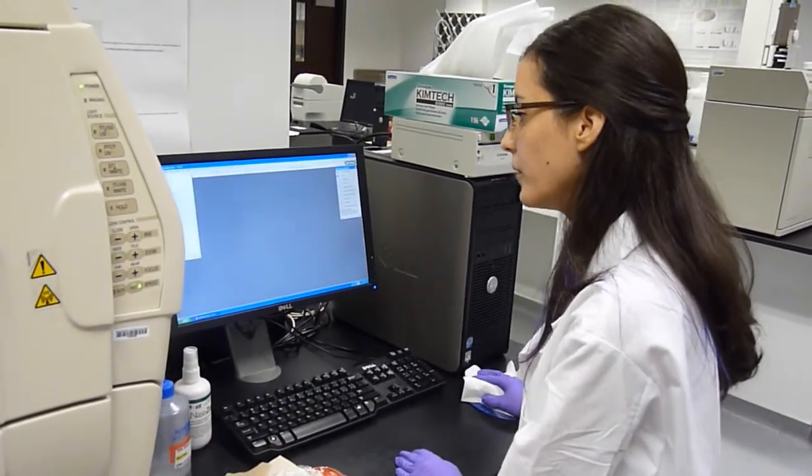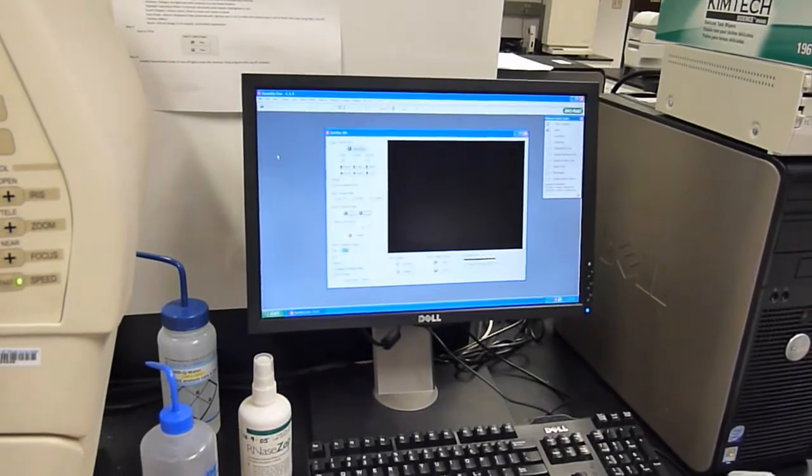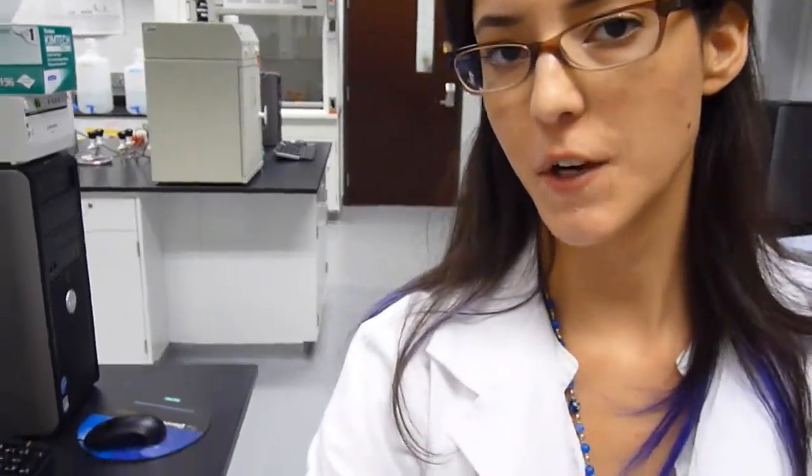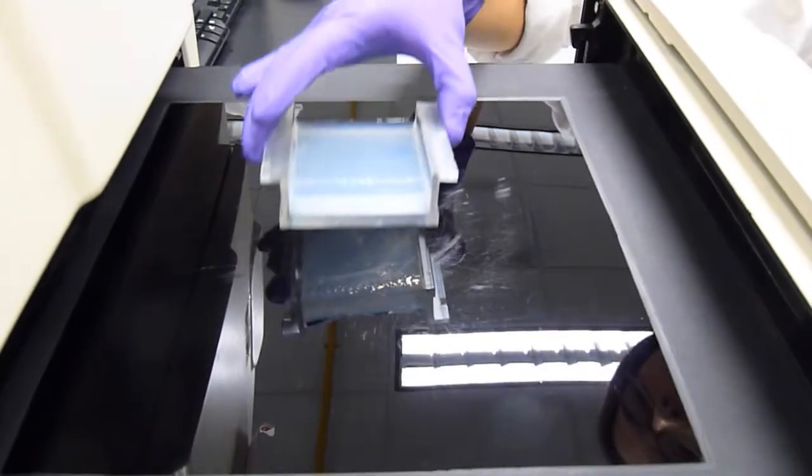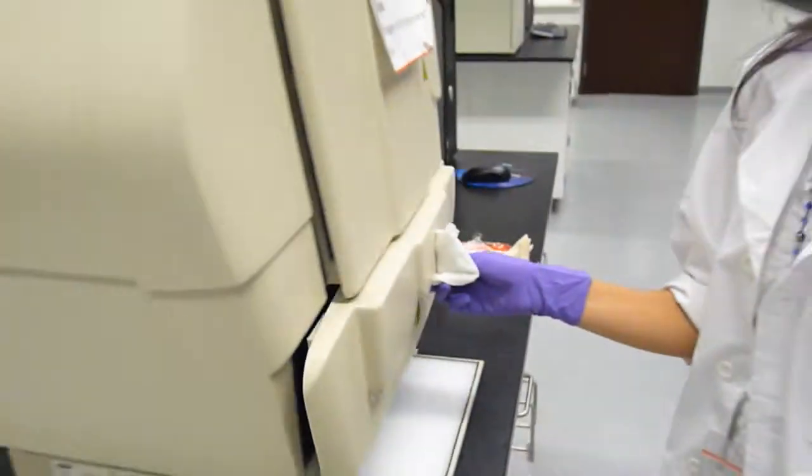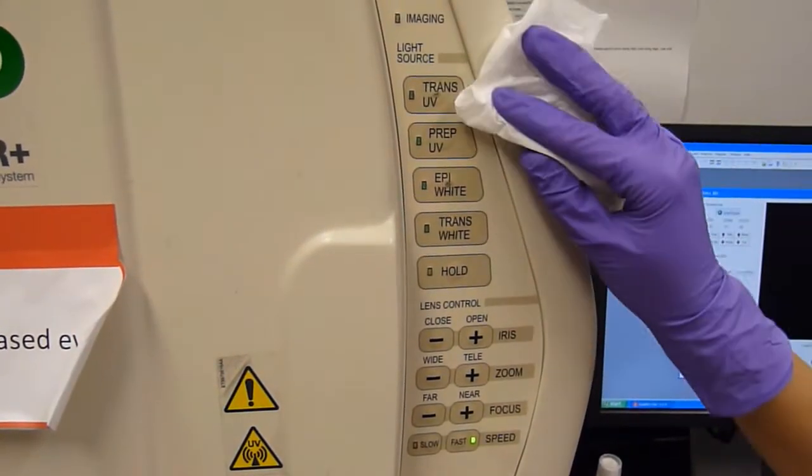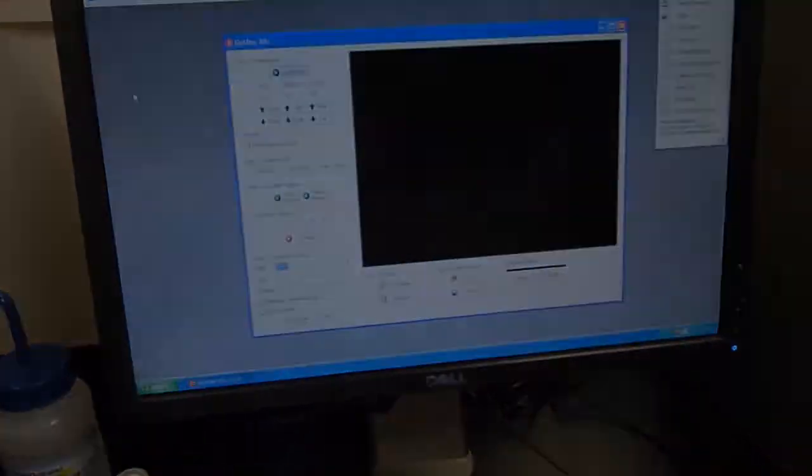Next, we're going to go to File, GelDoc XR. Open that. Once the software is ready, we need to open our tray. Load your gel. Place it in the center. And close. Because this is a fluorescent sample, you want to click on the Trans-UV button. After you have your tray inside, you can adjust the zoom focus features as you like. You can also use the acquire image and optimize display features on the software to try to get the best image possible.